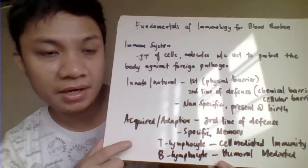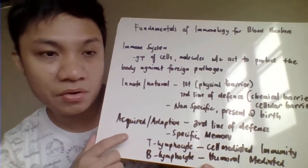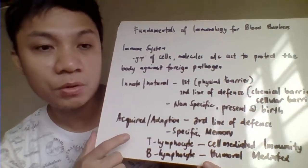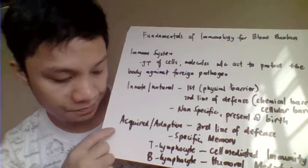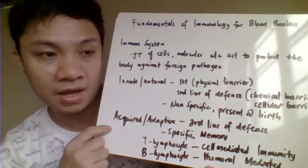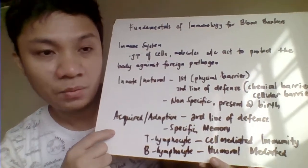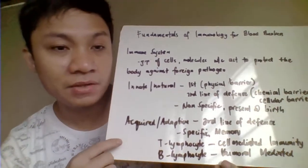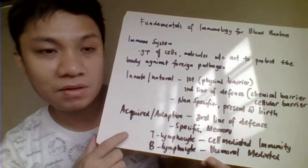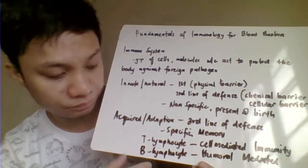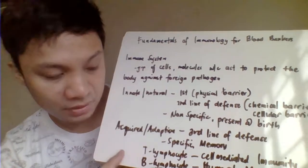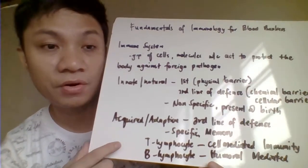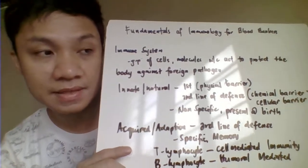Natural innate immunity includes the first line of defense — physical barriers — and the second line of defense, which includes cellular and biochemical defenses. Acquired adaptive immunity, on the other hand, is developed as a product of exposure and therefore confers memory and specificity, since it is acquired after a second exposure. It involves B lymphocytes in humoral immunity and T lymphocytes in cell-mediated immunity.